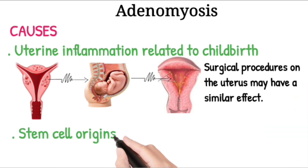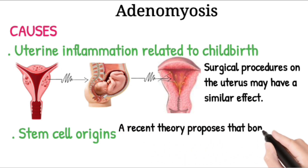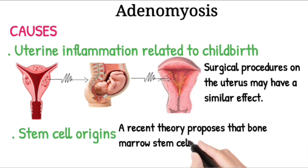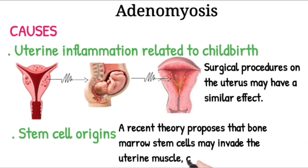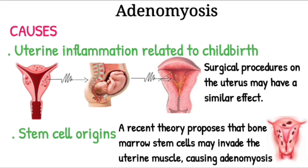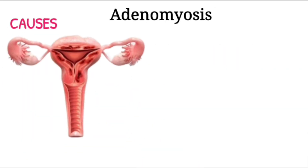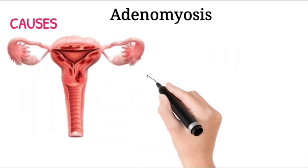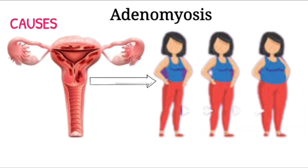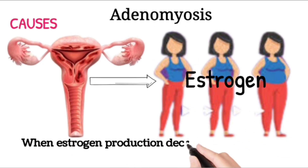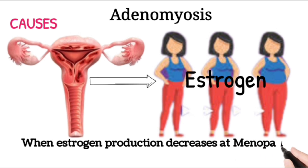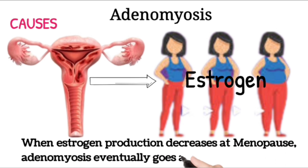Stem cell origins. A recent theory proposes that bone marrow stem cells may invade the uterine muscle, causing adenomyosis. Regardless of how adenomyosis develops, its growth depends on the circulating estrogen in a woman's body. When estrogen production decreases at menopause, adenomyosis eventually goes away.